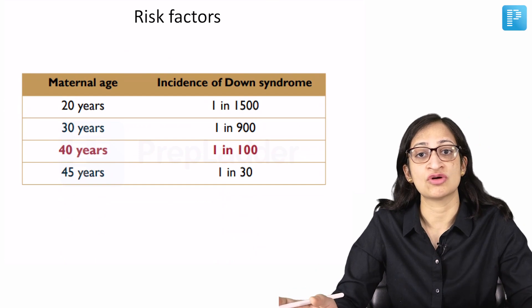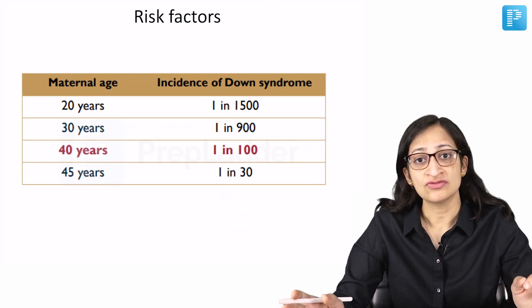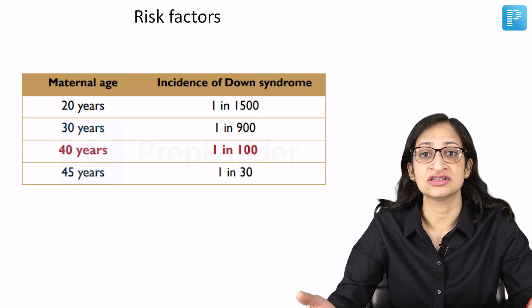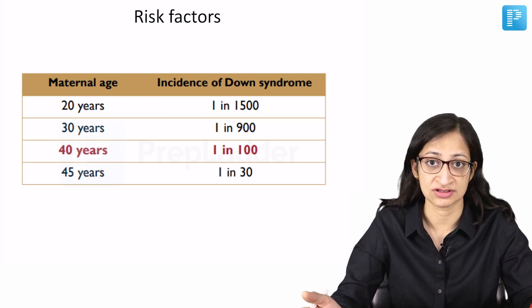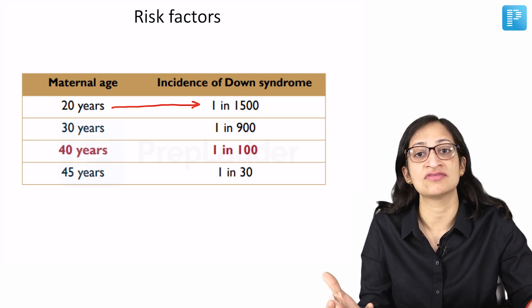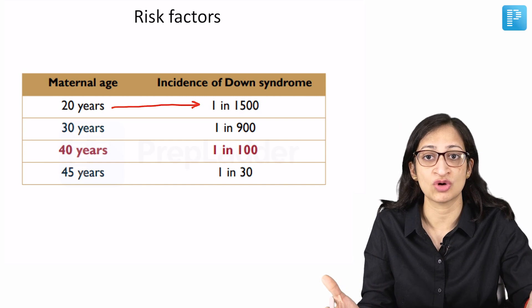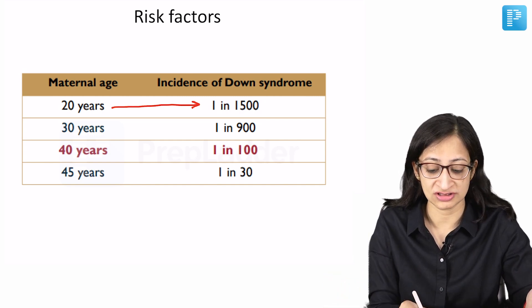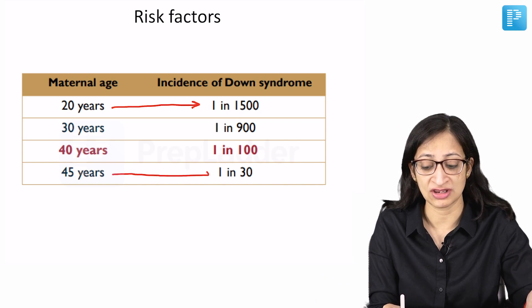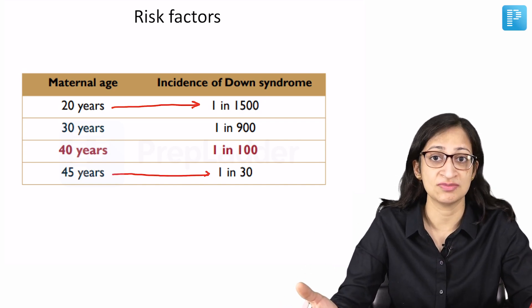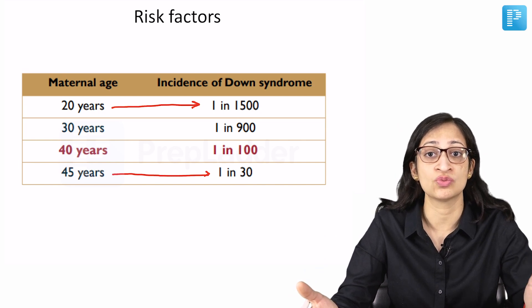There are some risk factors for Down syndrome. One of them is maternal age. As the mother's age increases, the risk of having a baby with Down syndrome also increases. If the mother's age is around 20 years, the risk is only about 1 in 1500. But if the mother's age is 45 years, the risk of having a baby with Down syndrome is almost 1 in 30.